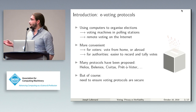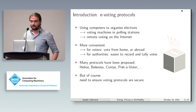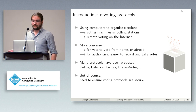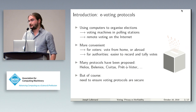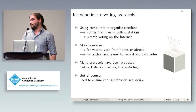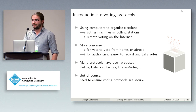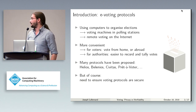Electronic voting is this idea of using computers to organize elections. It can take several forms, notably voting machines inside of polling stations that people use to vote, or remote voting, where people vote from the internet. We'll be focusing more on this second aspect here.